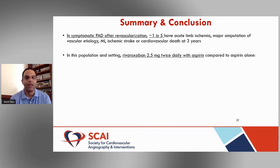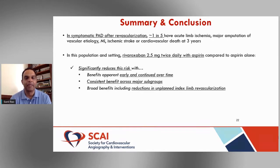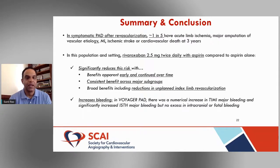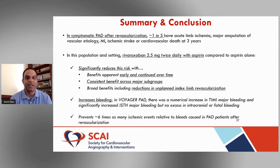In summary: in symptomatic patients after revascularization, about one in five have acute limb ischemia, major amputation, or other adverse events. In this setting, rivaroxaban 2.5 mg twice daily with aspirin compared with aspirin alone significantly reduces risk — with benefits apparent early and expanding over time, consistent across major subgroups, including reductions in unplanned index limb revascularization. There is a numerical increase in TIMI major bleeding, a statistically significant increase using ISTH criteria, but no excess in intracranial or fatal bleeding. It prevents six times as many ischemic events relative to bleeds caused.